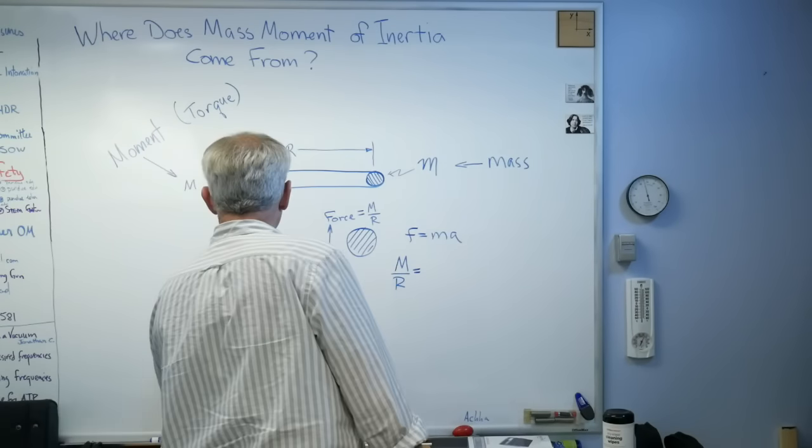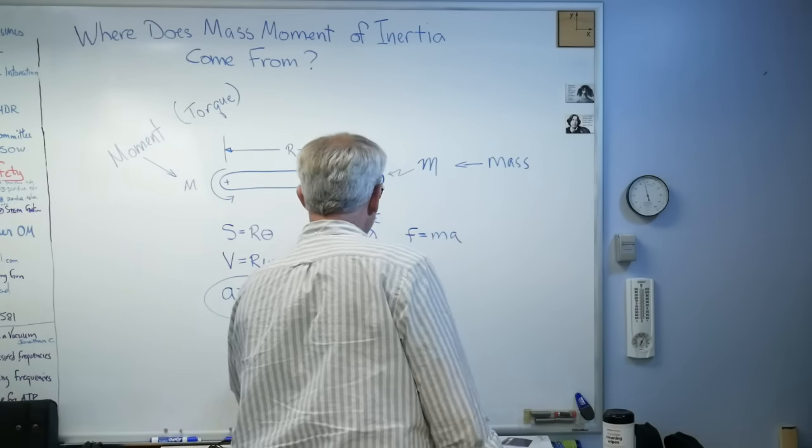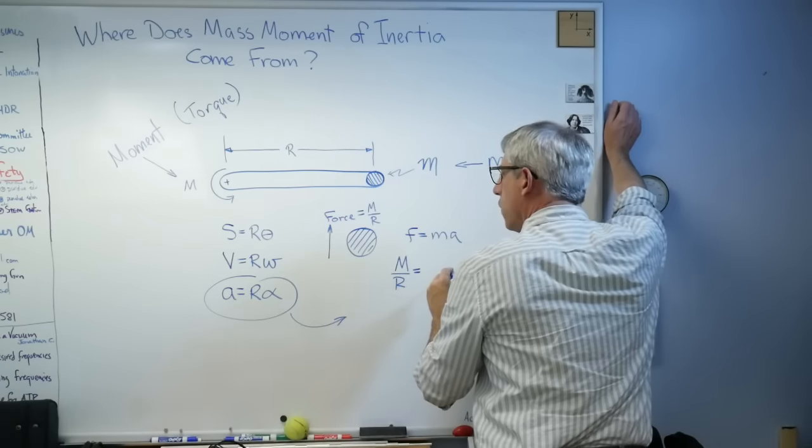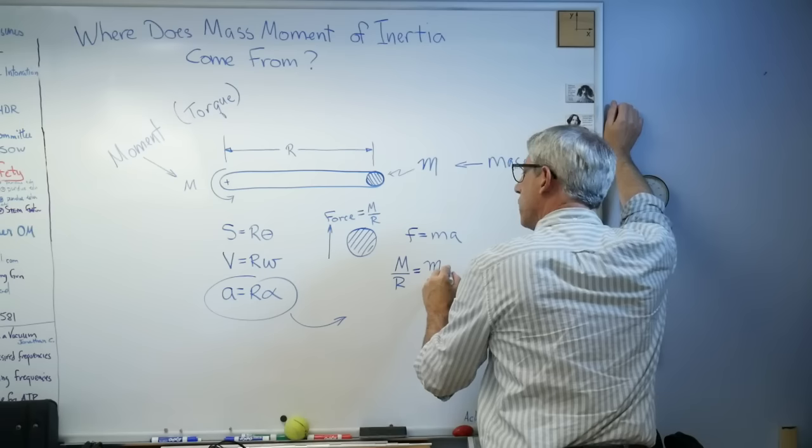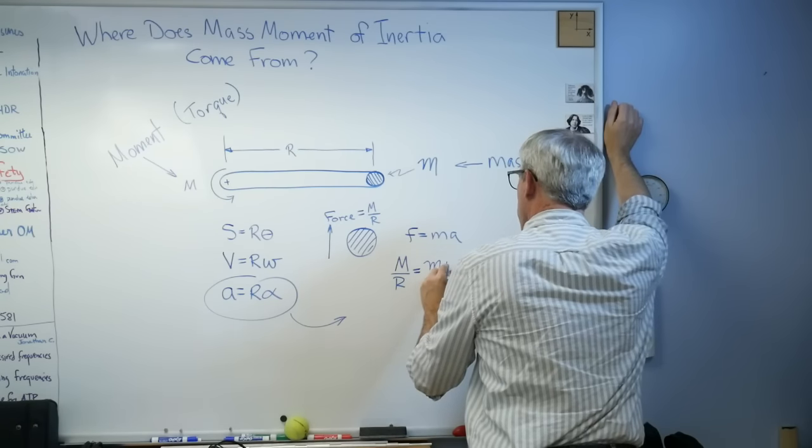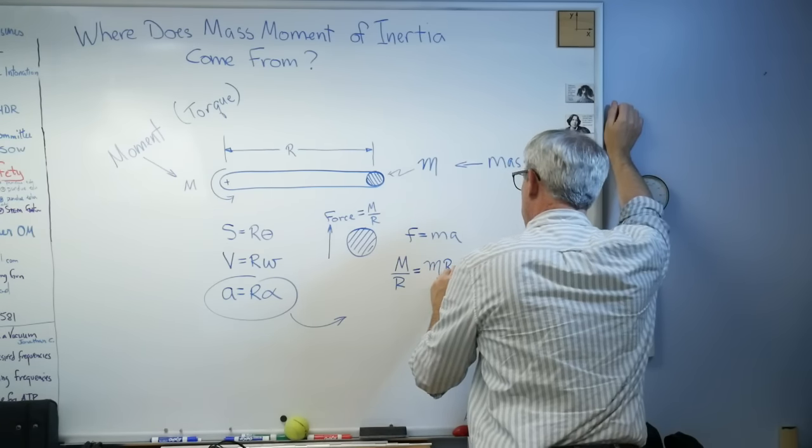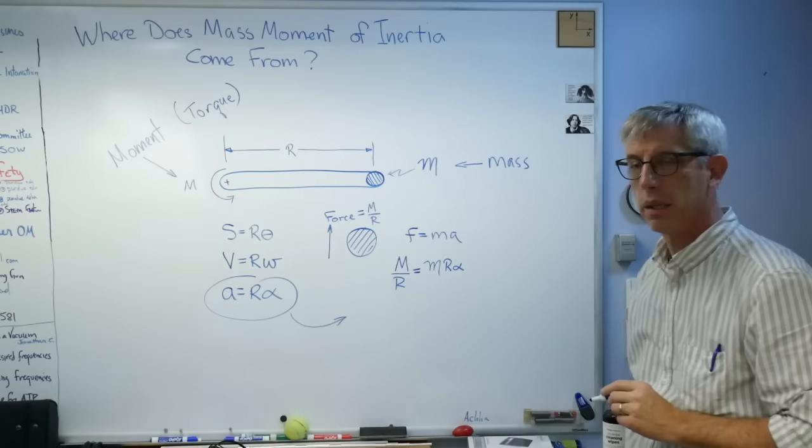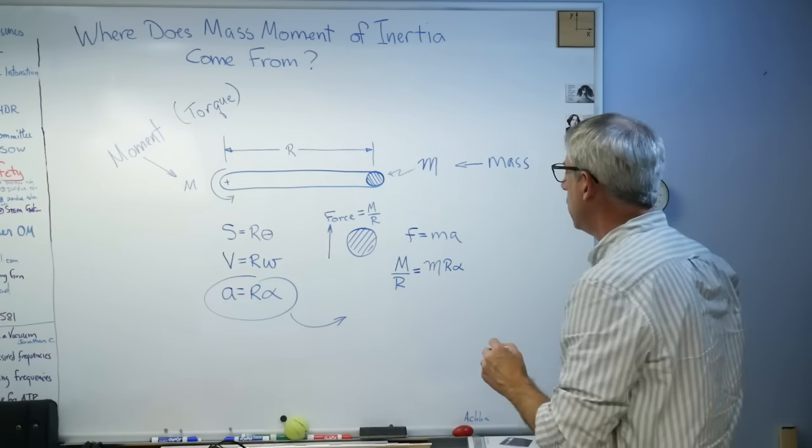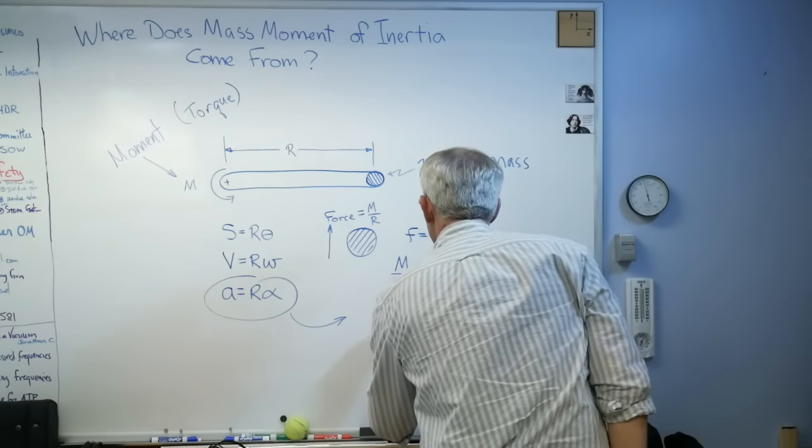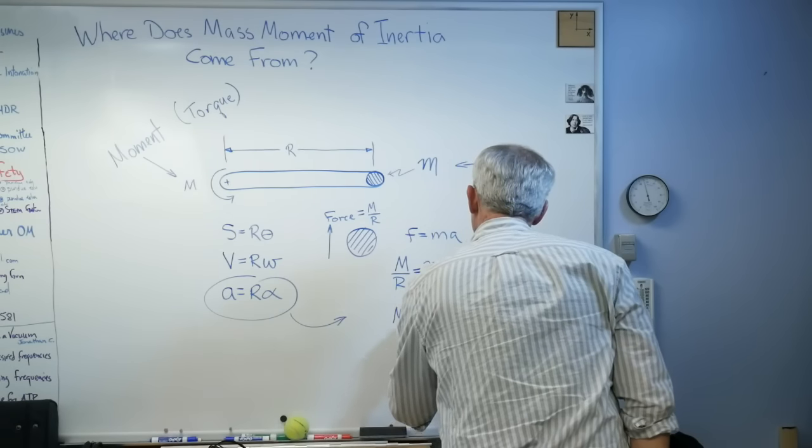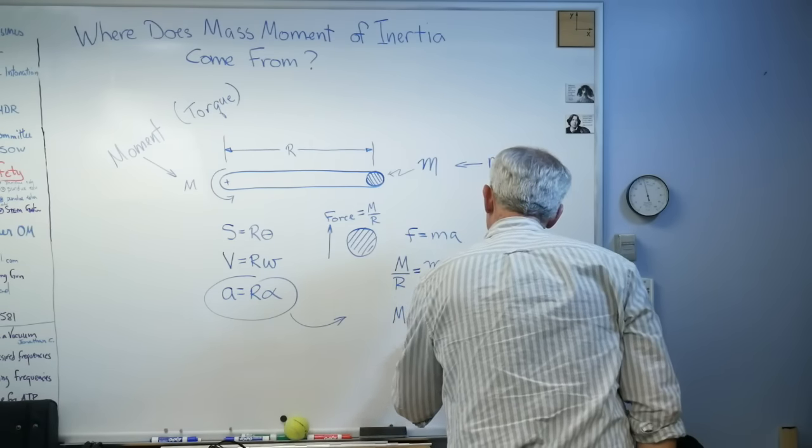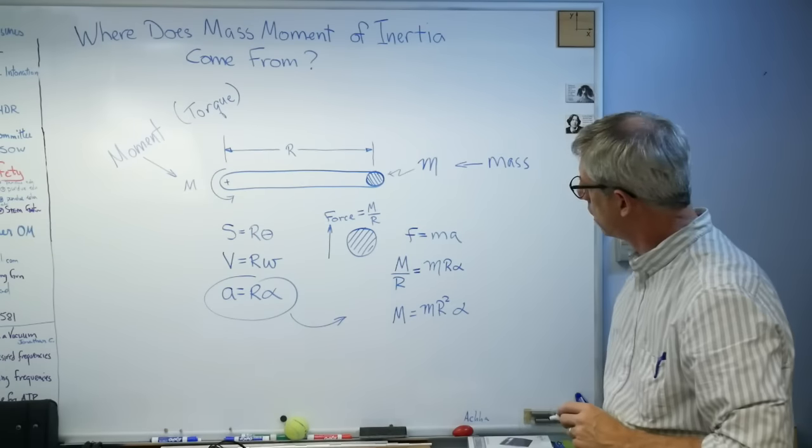Let's take this and put it over there. So we'll call this little m for mass times R times alpha. You see where I'm headed here. One last step: moment equals m R squared alpha.